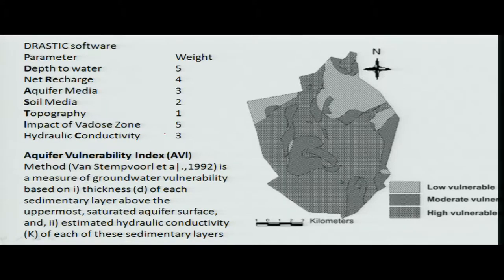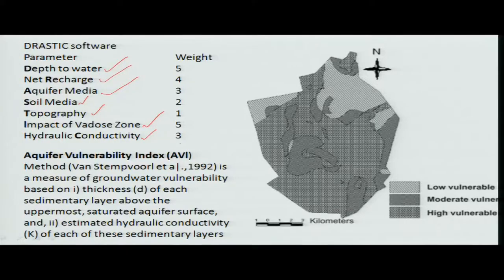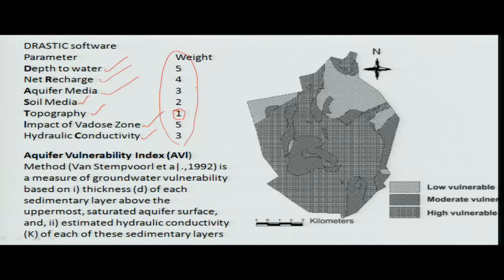Another software widely used for groundwater potential mapping is DRASTIC. The parameters it uses are: depth to water, recharge rate, aquifer media (the material it is made of, whether rock or consolidated/unconsolidated), soil thickness and characteristics, topography, vadose zone (anomaly-type storage areas), and hydraulic conductivity. Each parameter is assigned a weight — for example, shallow depth gives higher probability, while steep topography has lower importance. People assign weights to individual parameters and prepare vulnerability and groundwater potential zones.